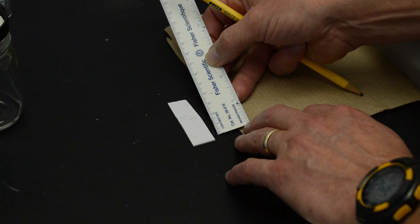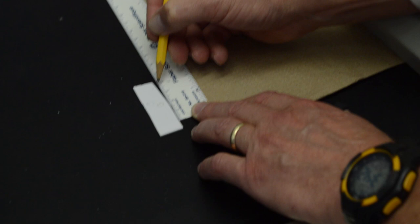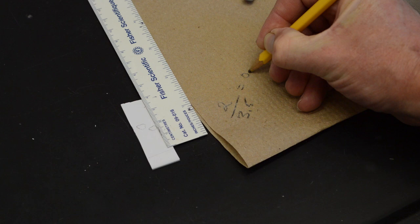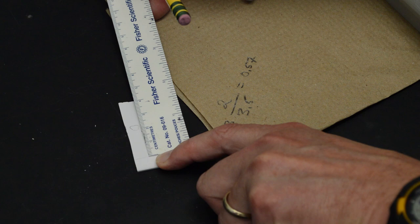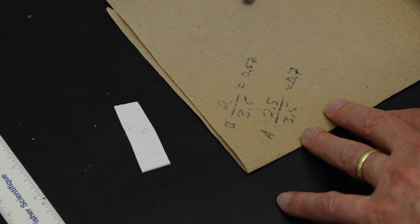We now calculate an RF for the spot, which is the distance from the bottom line to the spot, which in this case is 2 cm, divided by the distance from the bottom to the solvent front, which is 3.5 cm. So 2 divided by 3.5 is equal to 0.57 for spot B. For spot A, this spot is up approximately 2.5 cm. So spot A is 2.5 divided by 3.5, which is equal to 0.7. So the RF for A is 0.7, the RF for B is 0.57. It is an indication of how far up the plate the spots traveled.